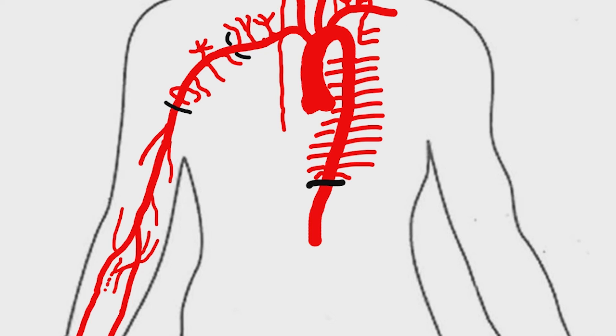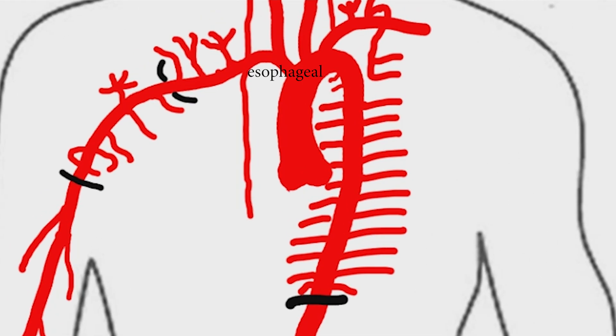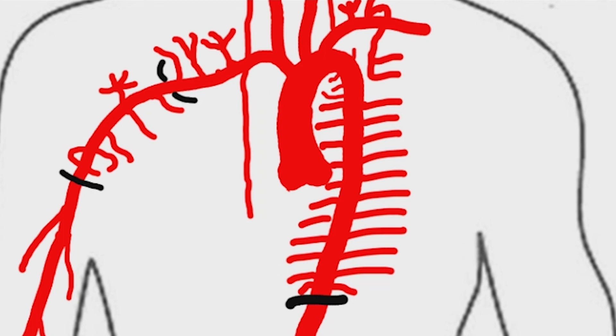The other branches of the descending thoracic aorta are the esophageal, mediastinal, and bronchial arteries. There are two bronchial arteries on the left and one on the right.